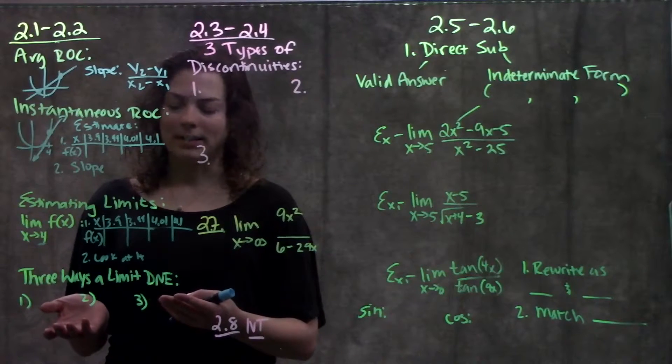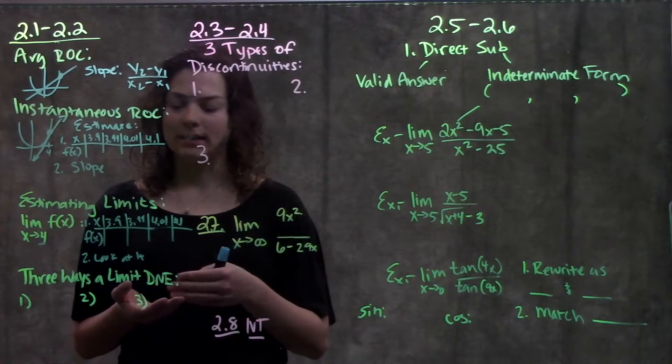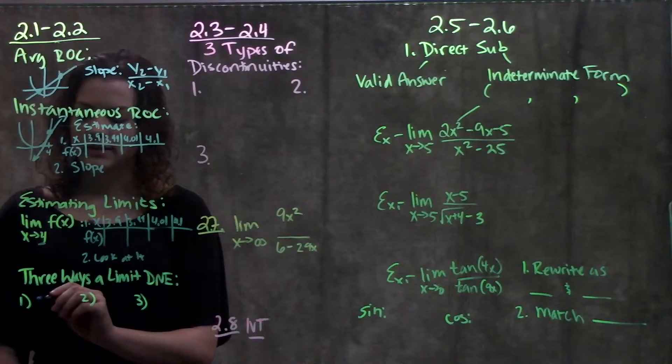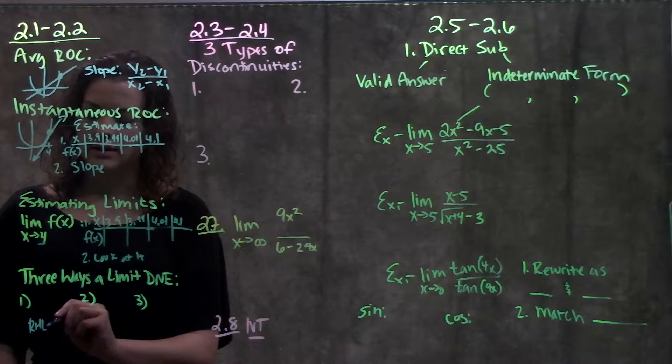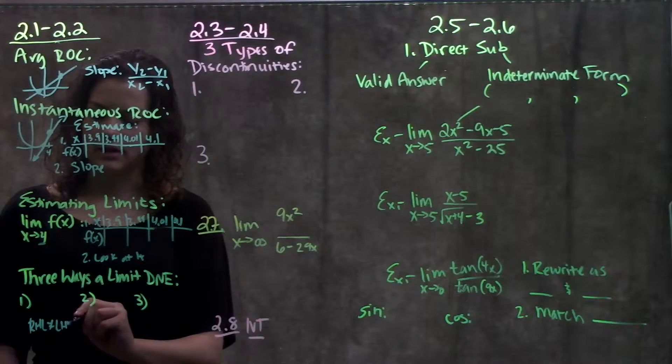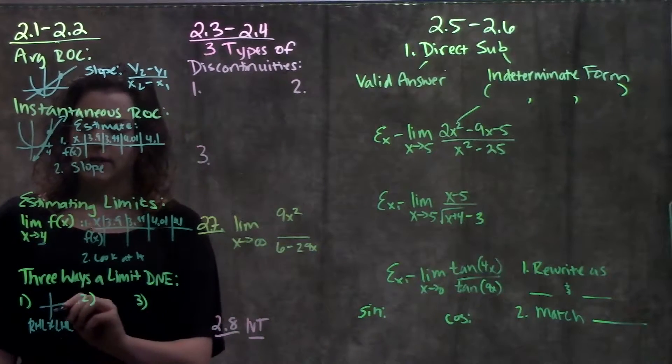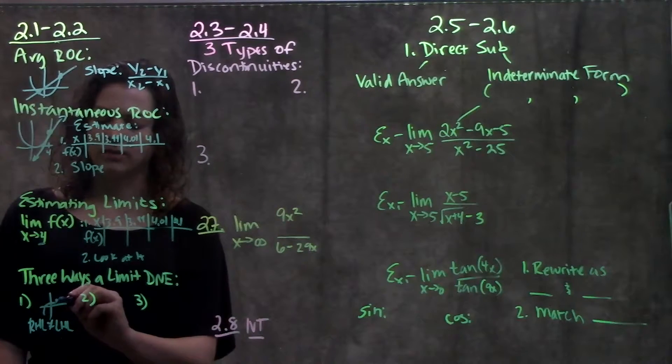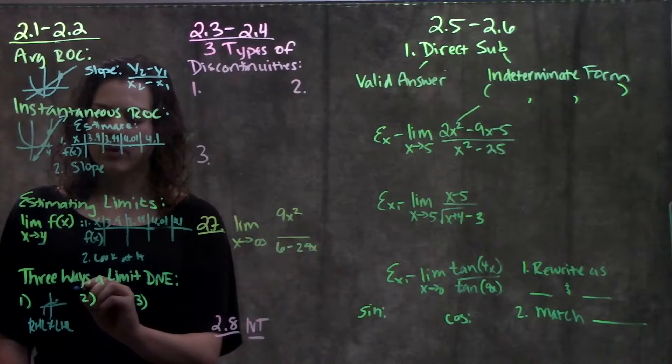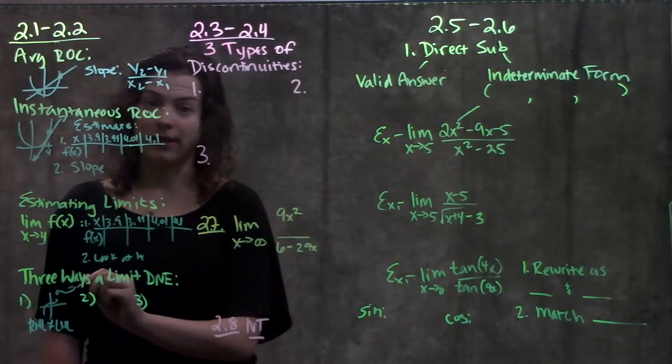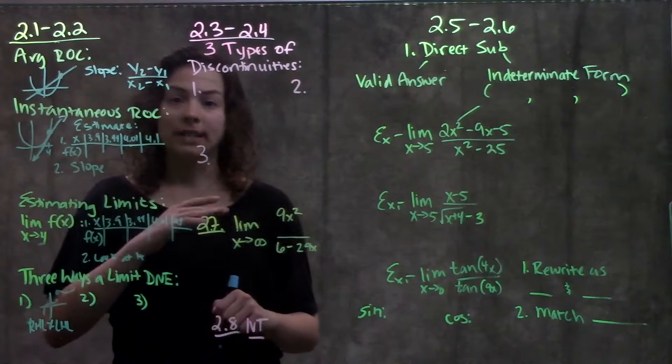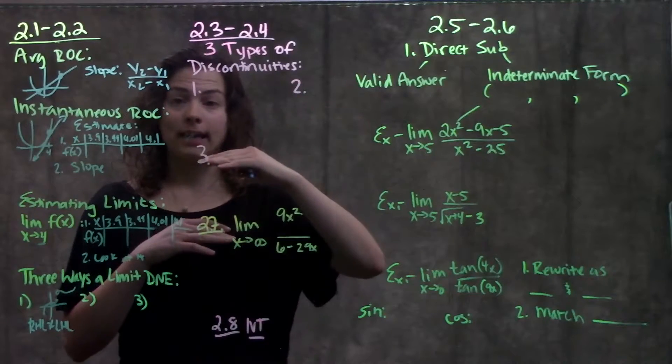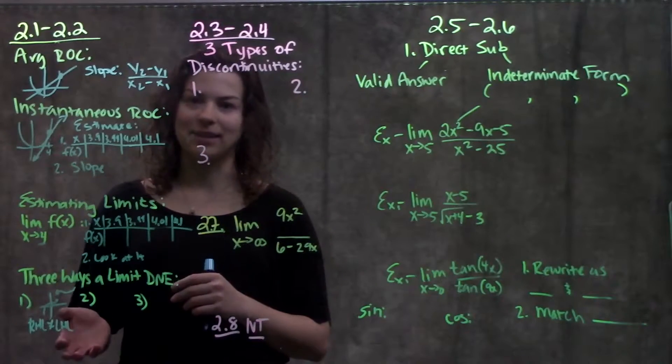Going off of that topic, three ways a limit does not exist. The first way is if the right-hand limit doesn't equal the left-hand limit. What that looks like on a graph is from the left, your function is approaching some value, but from the right, it's approaching some different value. Since the left-hand side isn't the same as the right-hand side, the limit doesn't exist in this case.